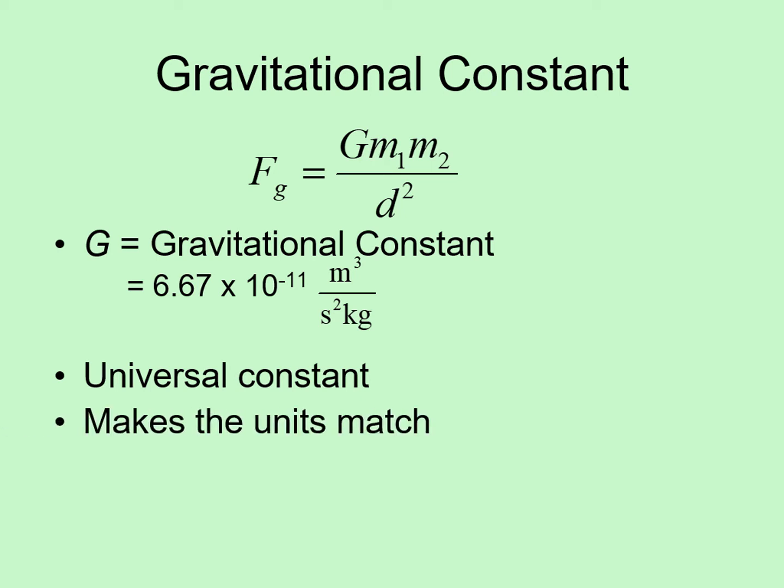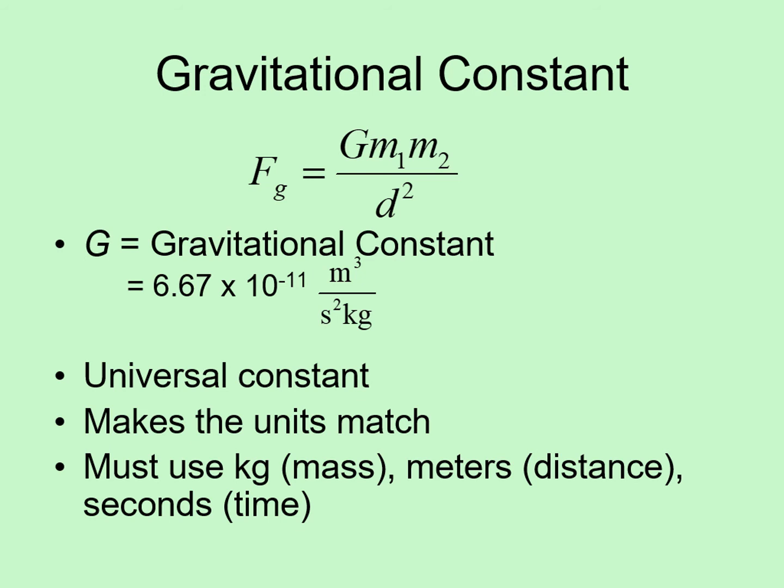As I said on the last page, this constant makes the units match up. This is the part that tells you how much force you get from one kilogram masses at one meter distance. At the same time, this forces you to use certain units. Anytime you see the gravitational constant in a formula, you know that all the rest of the units in the formula need to match up with this. So masses have to be in kilograms, distances in meters, and times in seconds. If any of the values you are given are in different units, you'll have to convert them before you can calculate, or you will get the wrong answer.